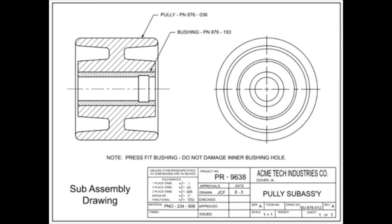Subassembly drawings are useful for smaller assemblies that may go on multiple end products, such as a hydraulic valve that goes on many different tractors.